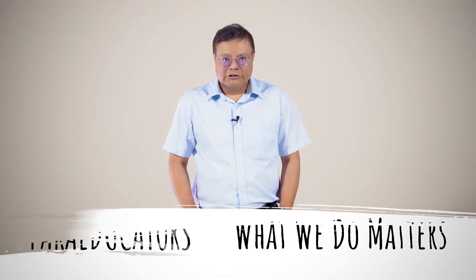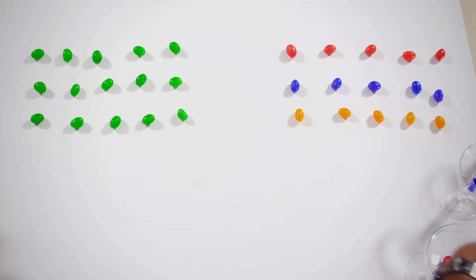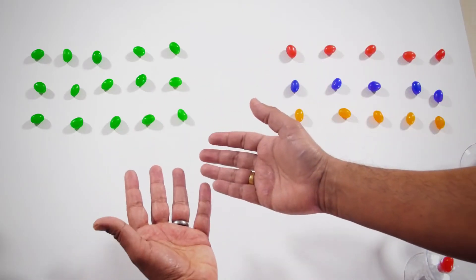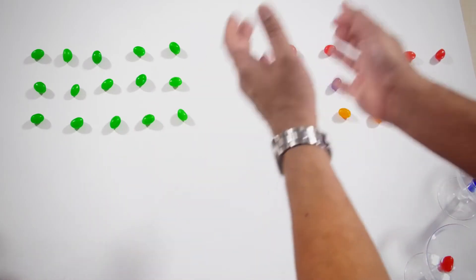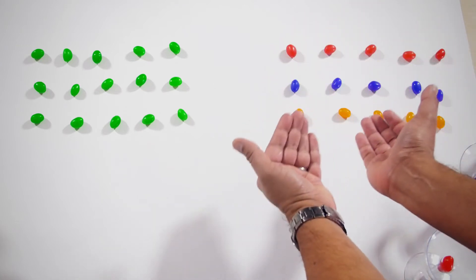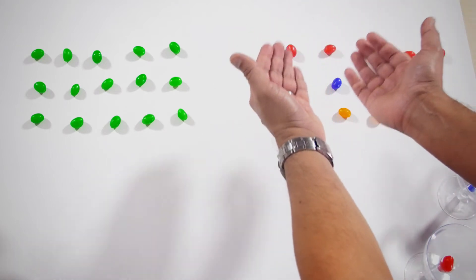Today I will show you the number 5 to 15. If you turn 5 to 15, you will get 5 to 15. 1, 2, 3, 4, 5, and then 5 to 15.